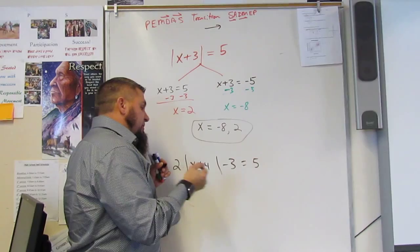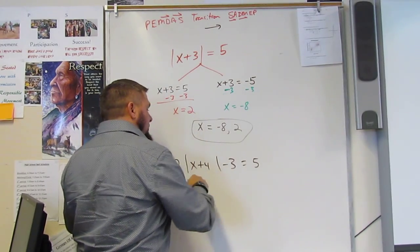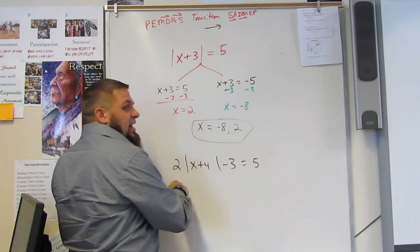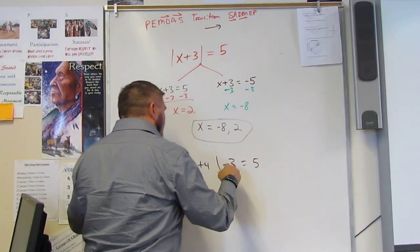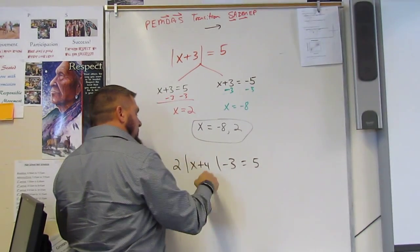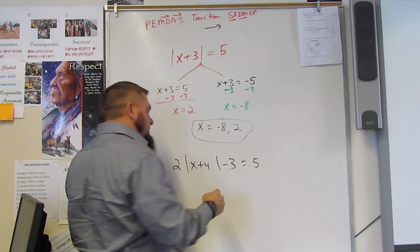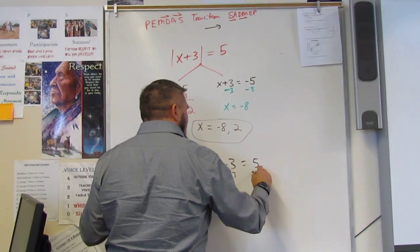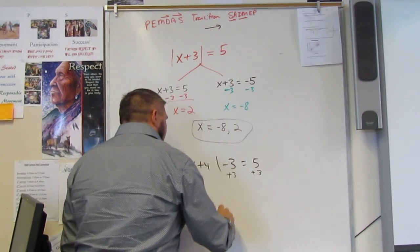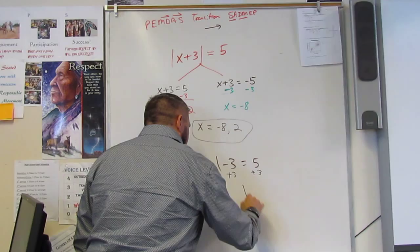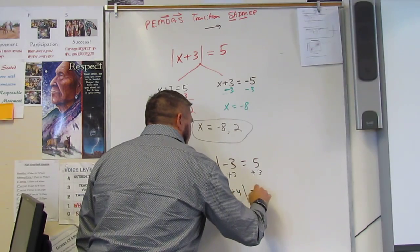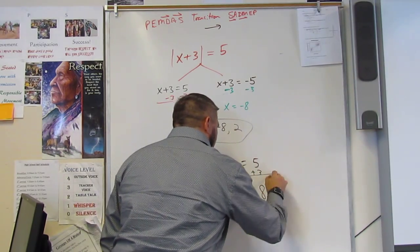So what I'm going to do first is solve for the absolute value. So I'm going to again SADMEP it to get absolute value by itself. So plus 3, plus 3. And I get 2 times the absolute value of x plus 4 equals 8.